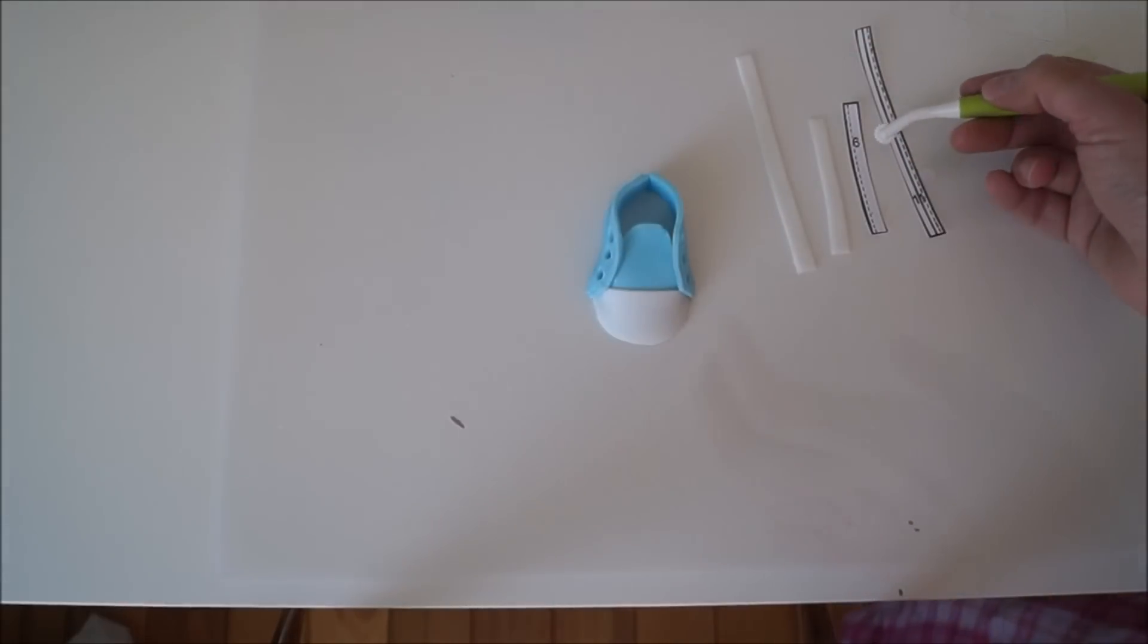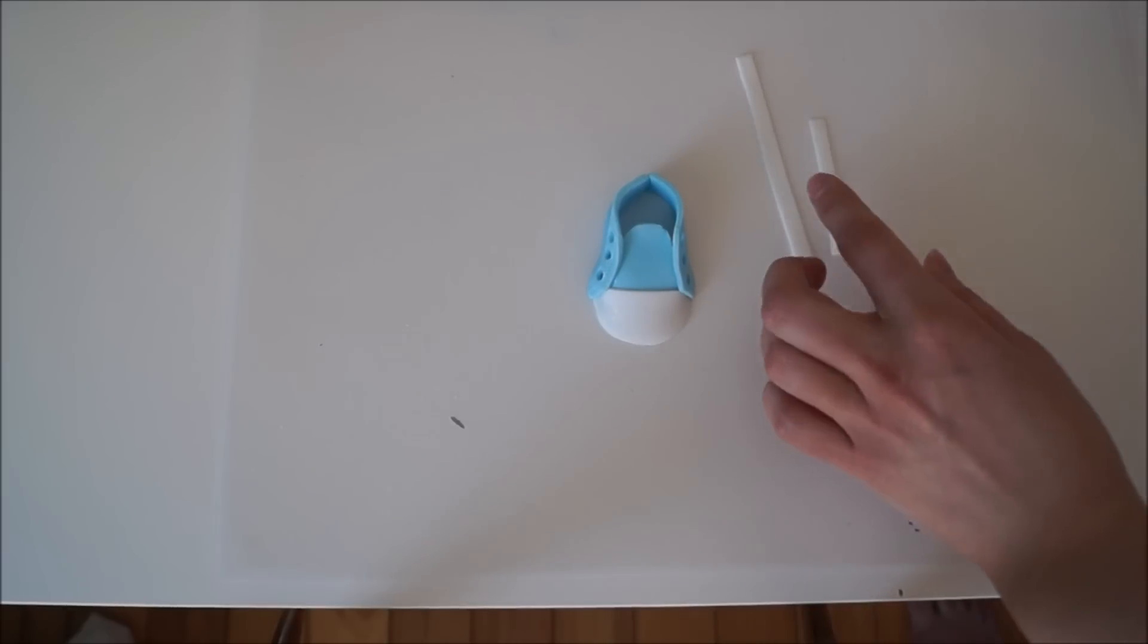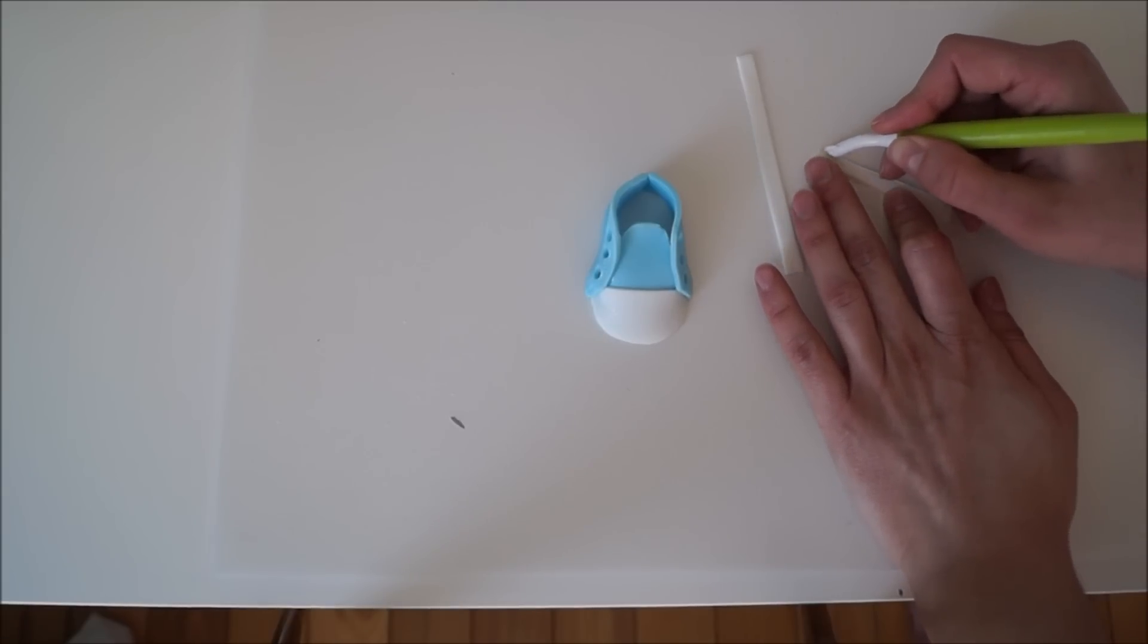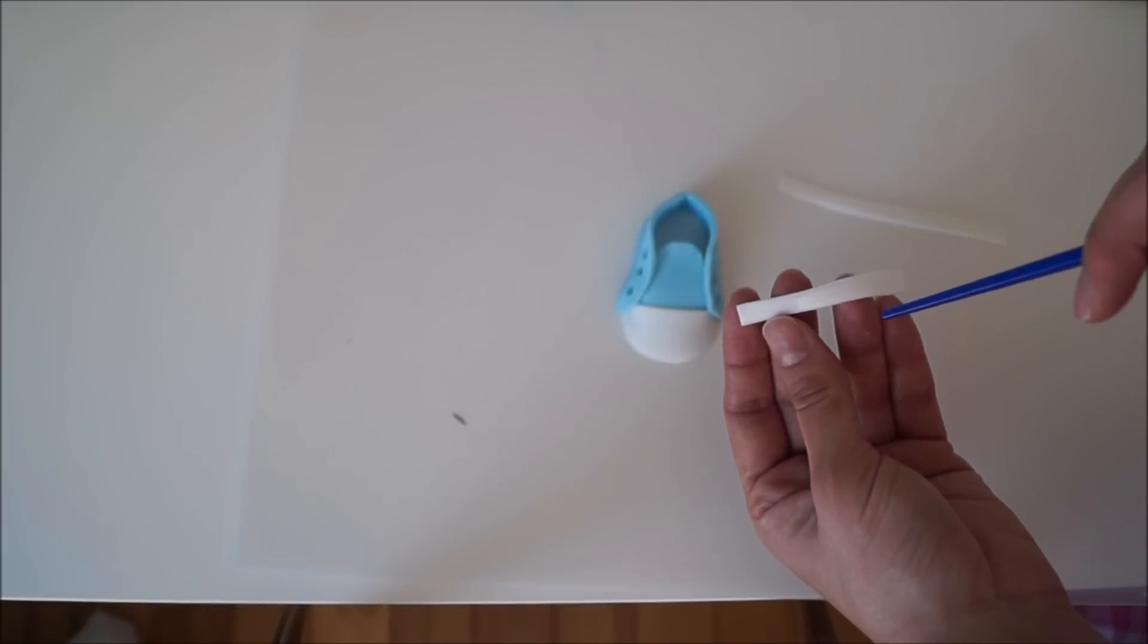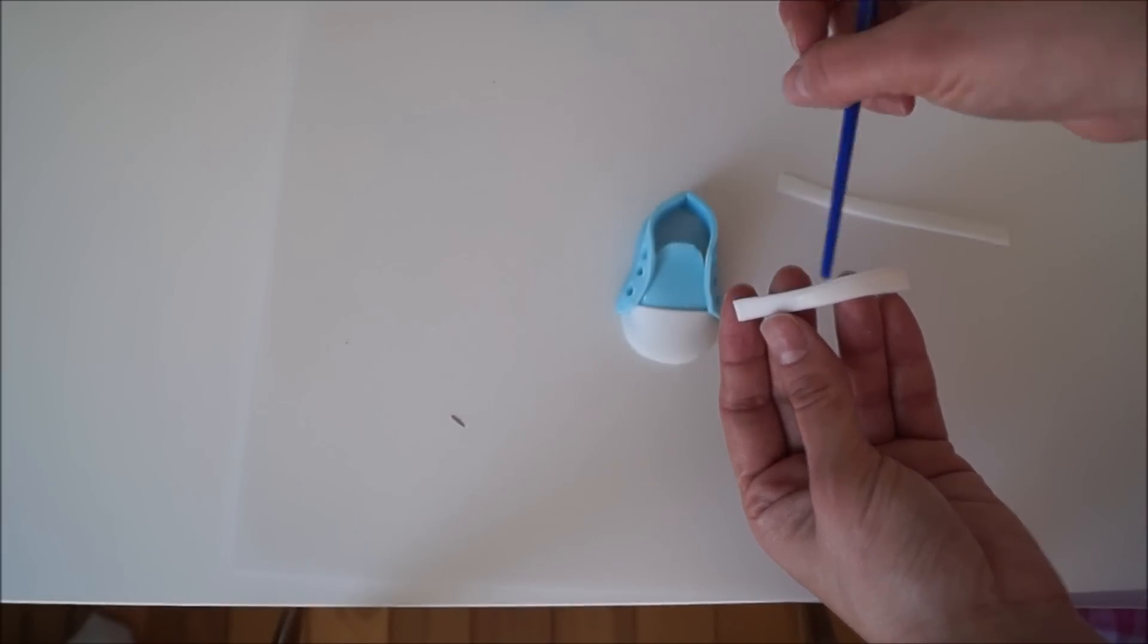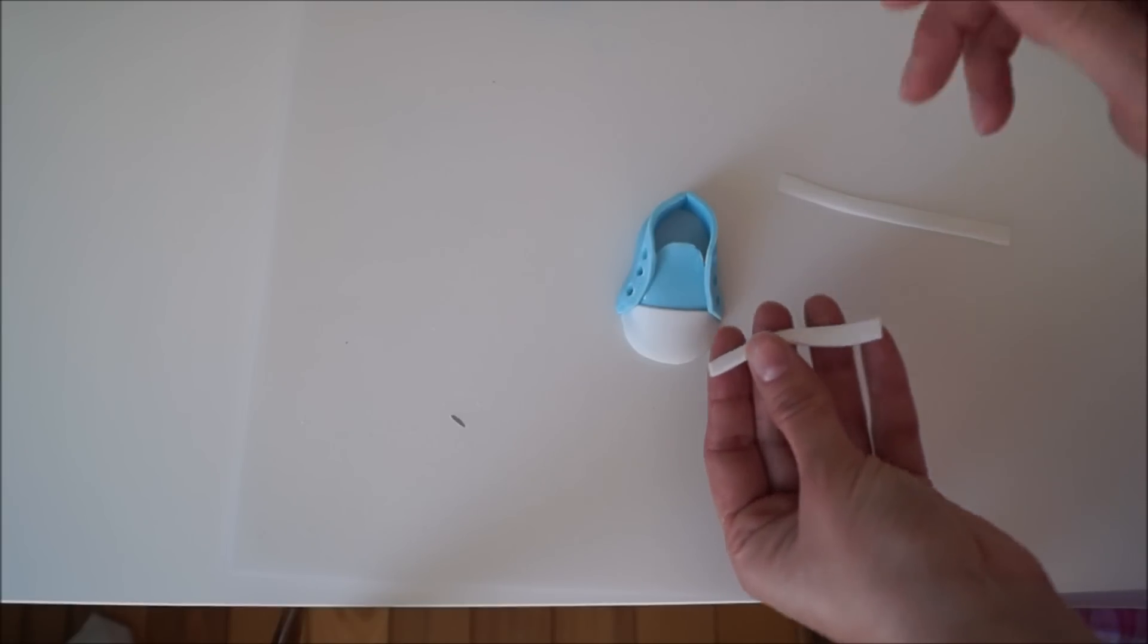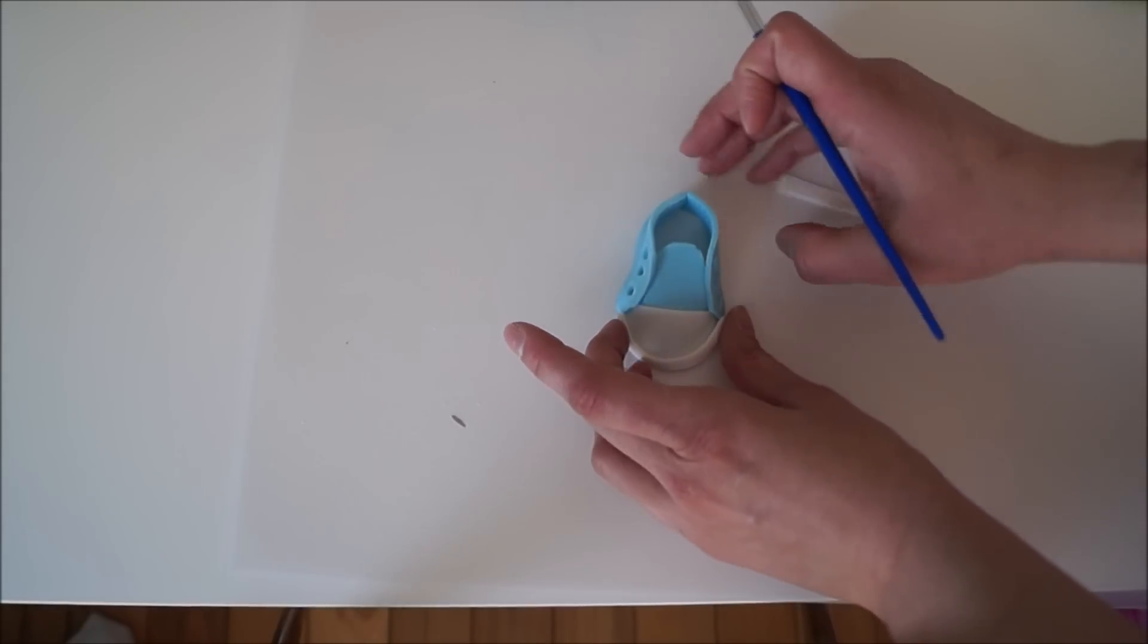Cut out number six and eleven with white fondant and recreate the little line with your quilting tool. Take the smaller piece, make sure the quilting is at the top, turn it around, brush some water behind it, and glue this at the front of your shoe.